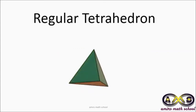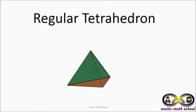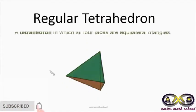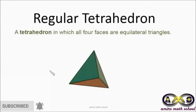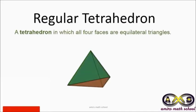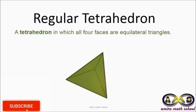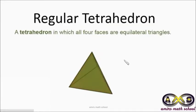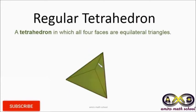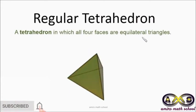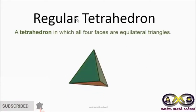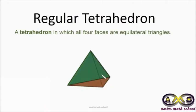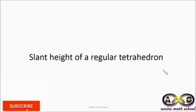A tetrahedron is a very special type of pyramid. Now we are going to discuss the regular tetrahedron. A tetrahedron in which all four faces are equilateral triangles is called a regular tetrahedron. Since all sides of an equilateral triangle are equal, for a regular tetrahedron all edges are equal.